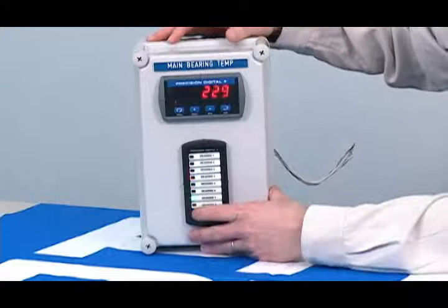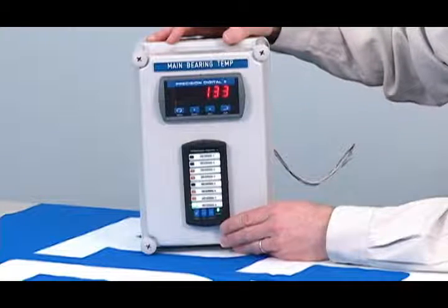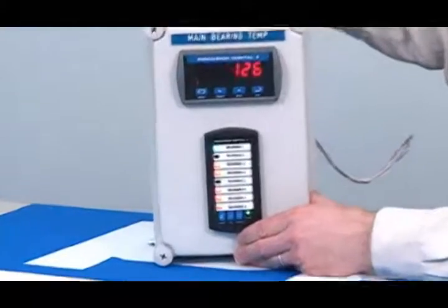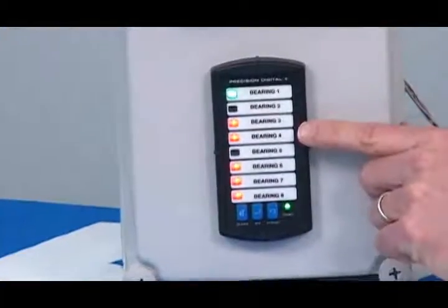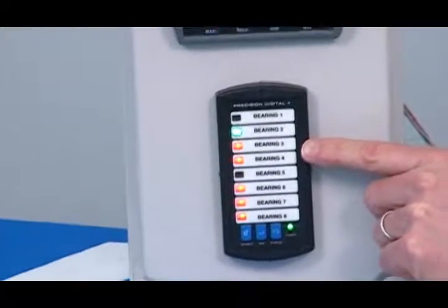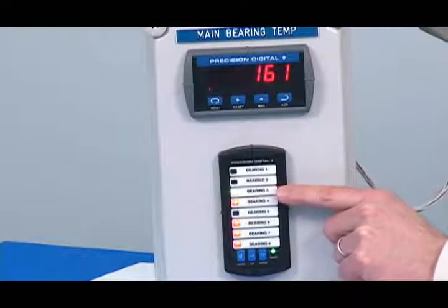Now we'll silence by pressing the silence button, and then we'll acknowledge by pressing the acknowledge button. Now as the Minimux continues to scan, it will look to see if the alarm condition is still present. In this case, it is, so the light will stay on.